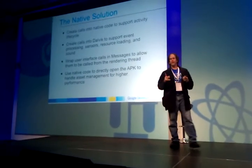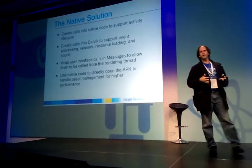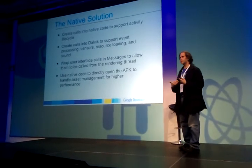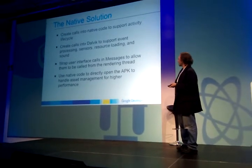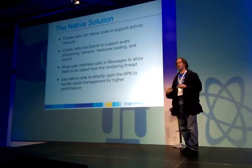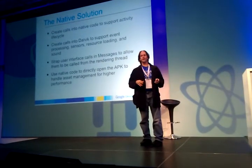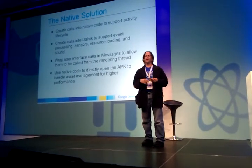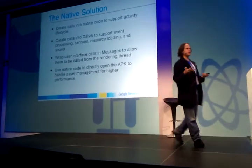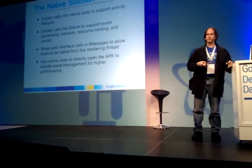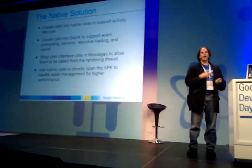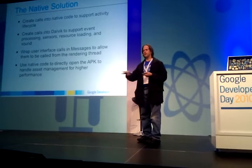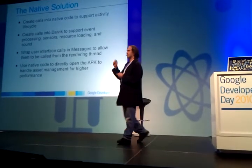So what do we do? We create callbacks and data codes for our activity lifecycle. We create callbacks for Java to support event processing, sensors, resource loading, and sound. We wrap our user interface calls in messages to allow key calls from the rendering thread. Most of the Java API calls cannot be called on anything but the main thread. Typically, when you're doing an NDK app — especially with OpenGL — you're going to have a thread responsible for rendering, and another thread responsible for handling the native window. By wrapping UI calls in messages, we just make calls from the rendering thread.